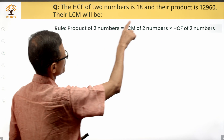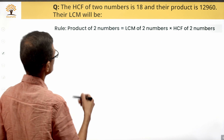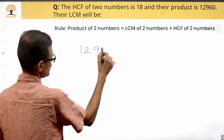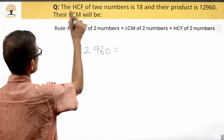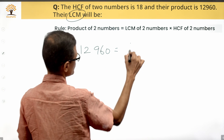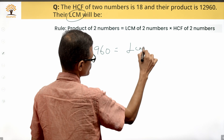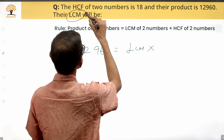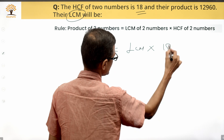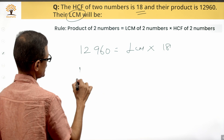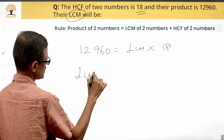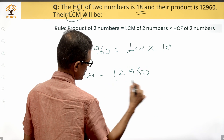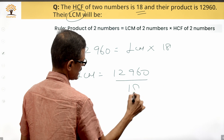What is given to us? They have said the product of the two numbers is equal to 12960. What is asked? We will have to find out the LCM of these two numbers. What else is known? The HCF of these two numbers is equal to 18. So LCM is equal to 12960 divided by 18.